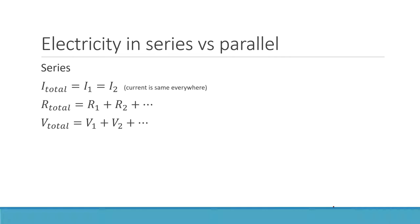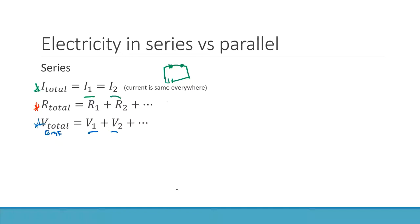The three rules for a series circuit: first, the total current equals the current at every point — the current is the same everywhere because there's only one path. Second, the total resistance equals the sum of all the individual resistances. Third, the EMF equals the sum of all the voltage drops — again because there's only one path, you just add all the voltage drops together to find the total voltage dropped overall.